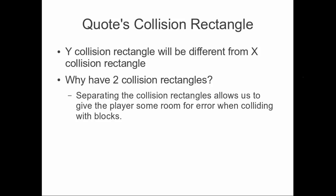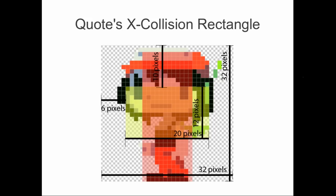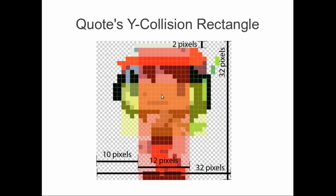If you play through Cave Story, I think you'll find what I mean. Moving on, I'm going to show you Quote's collision rectangles. The X collision rectangle — used to decide if he has collided in the X direction — is 6 pixels in, 20 pixels wide, 10 pixels down, and 12 pixels tall, all within a 32 by 32 tile. For his Y collision rectangle, it's 2 pixels down, 30 pixels tall, 10 pixels in, and 12 pixels wide.